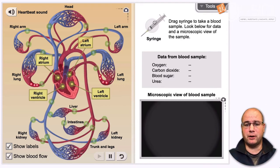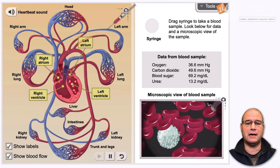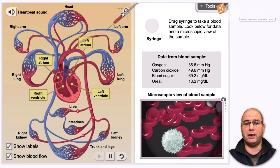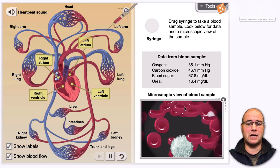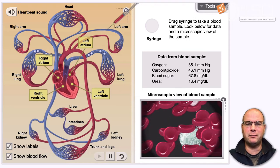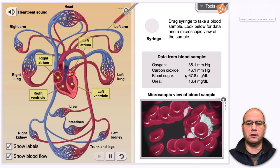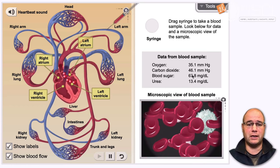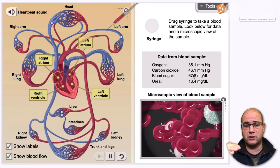Now if we take this syringe up here, which is just a fancy word for a needle, we can test the blood on each side of, in this case, an appendage like an arm. And then we get, when we do that, we get a microscopic view of the blood and what it looks like, and we get a chemical sample of what the blood looks like as well. So in this case, we can look at the oxygen level, we can look at the carbon dioxide level, we can look at the blood sugar, remember that's energy, and we can look at the urea level, which is waste.